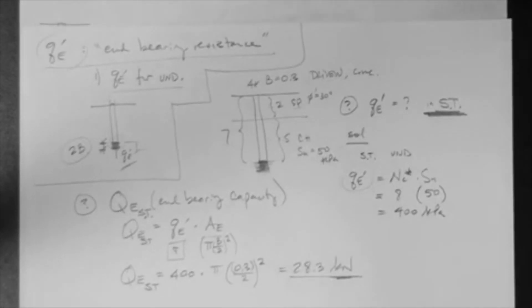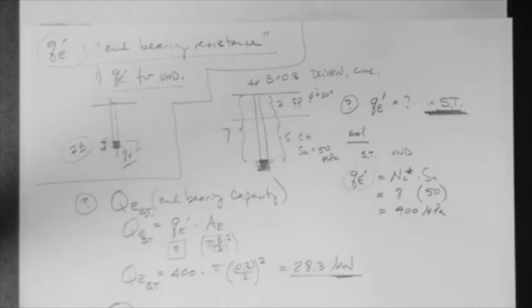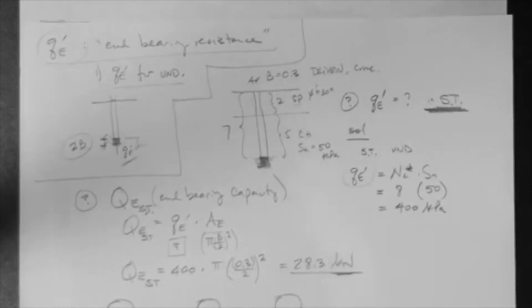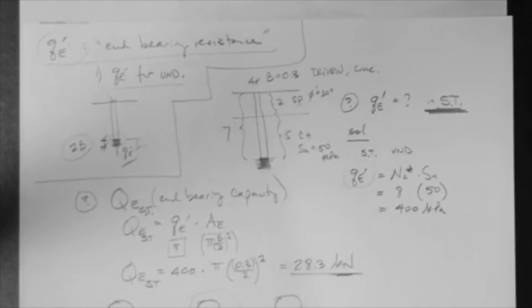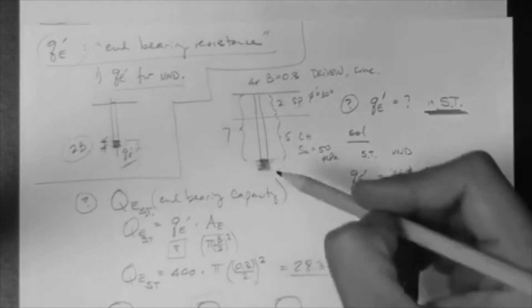So, finally, your capacity of the pile is the side friction capacity plus the end-bearing capacity. So, you would have to be able to get this one, or to get this one, you would have to do the same thing that we did for the previous example.